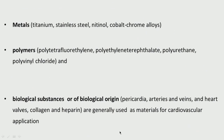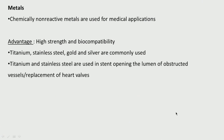Titanium, stainless steel, nickel-titanium combinations, cobalt-chromium — all these metals are used. Polymers include PTFE, PET, polyurethane, polyvinyl chloride. Biological materials could be pericardia, arteries, veins, heart valves, and collagen used as material for cardiovascular applications.